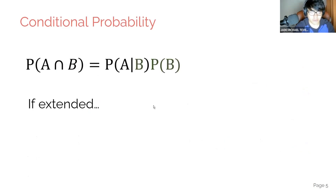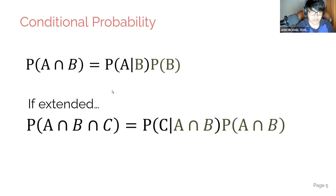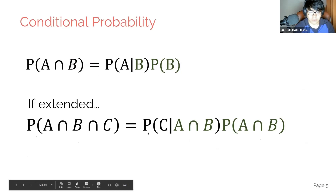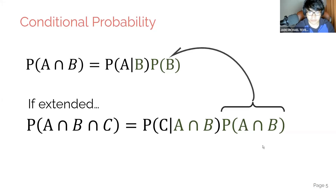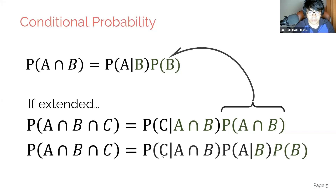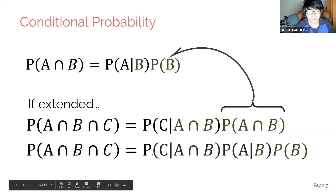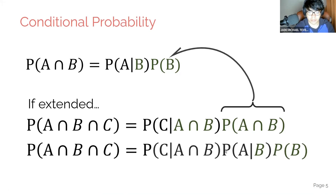We can generalize that to more sets — not just two sets A and B, but A, B, and C. If that's the case, we simply expand it. We read this as the probability of C given the intersection of A and B, multiplied by the probability of the intersection of A and B. Expanding further: probability of C given A intersect B, times probability of A given B, times probability of B.